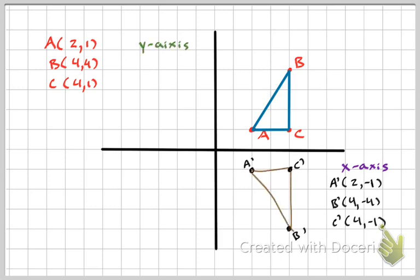Now reflecting across the Y axis — all the X values become negatives. A prime is at negative 2, 1; B prime is at negative 4, 4; and C prime is at negative 4, 1. Again, you could just count it if you wanted to, but this shows how to do it using the rules.